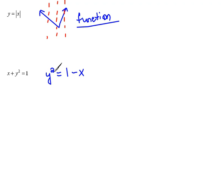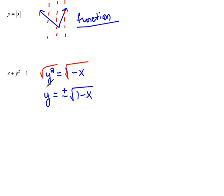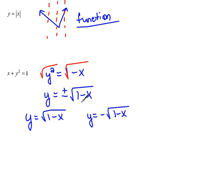In order to undo the squaring, what we have to do is take the square root of both sides. We get y equals — and don't forget, when you square root something, you get plus or minus the square root of 1 minus x. This is actually two equations written compactly. This is really y equals the square root of 1 minus x, and it's also y equals negative square root of 1 minus x. That means if I put in an x value, I'm going to get two different y's.